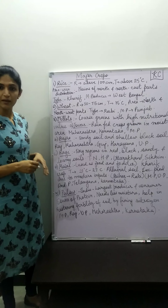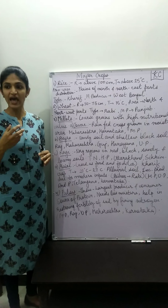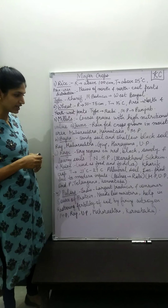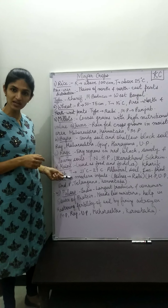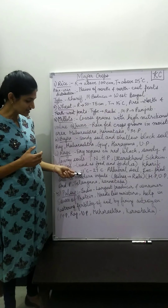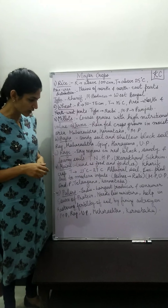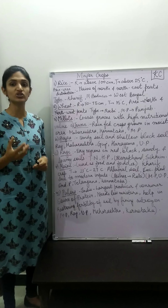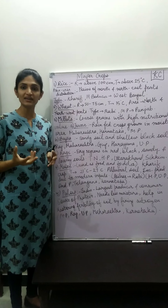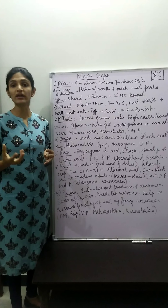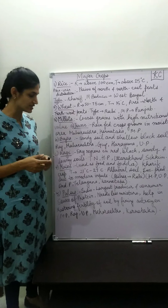Now the third food crop category is maize. Maize is a crop that can be used as food and also as fodder — meaning it is used to feed cattle and animals. Maize is cultivated in the Kharif season. The temperature requirement is 21 to 27 degrees Celsius, and the type of soil is alluvial soil. In India, maize production has increased through the use of high-yielding varieties of seeds, modern fertilizers, pesticides, and modern irrigation practices.